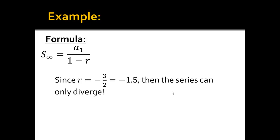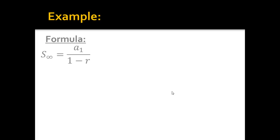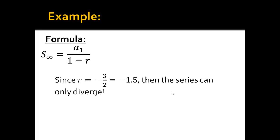Well, r is negative 3 halves, as we saw in the last slide, so the series can only diverge because that's negative 1.5. That's smaller than negative 1. That's not in between negative 1 and 1.